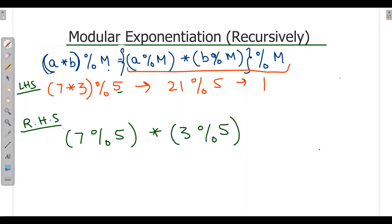And collectively it will be mod 5. So 7 mod 5 is 2, into 3 mod 5 will be 3, and this will be collectively mod 5. So 2 times 3 is 6, mod 5 will be 1. That means LHS is equal to RHS.